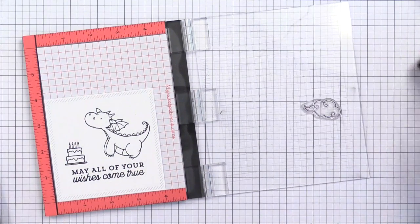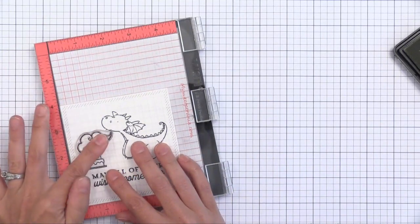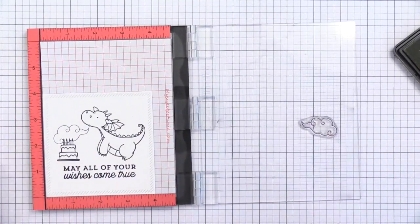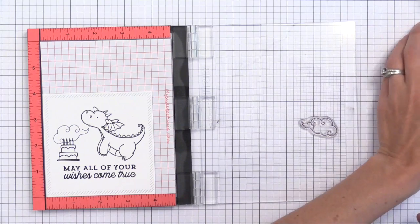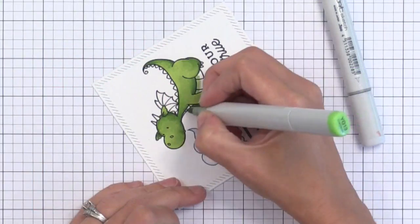I'm doing this all onto a die cut that I created from a My Favorite Things die set. It creates little slash lines around the square die cut.